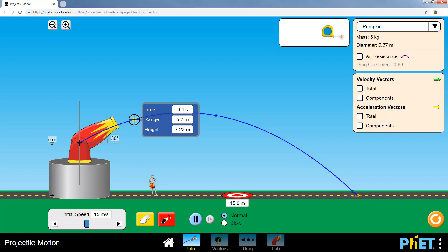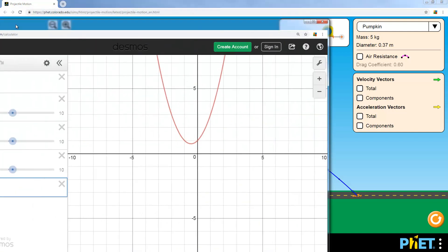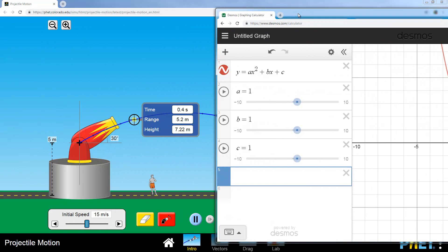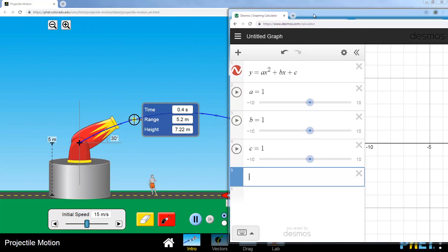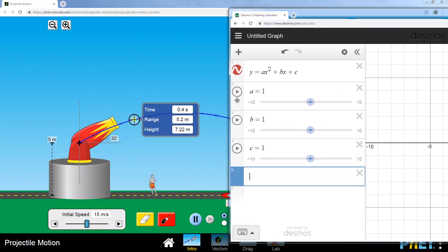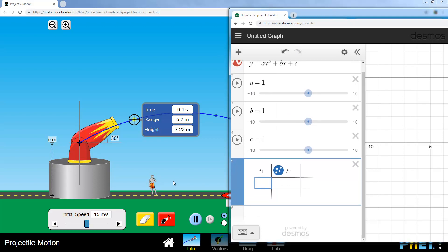So if you take Desmos, and I've got this set up, you can see the parabola here, we get to that in a little bit. But I'm going to make a table. So I'm going to move it over here so we can see both at the same time. So down here, if I click on the plus, add an item, I'm going to add a table.